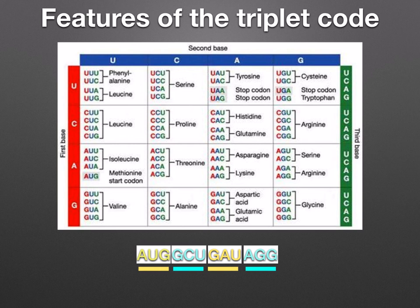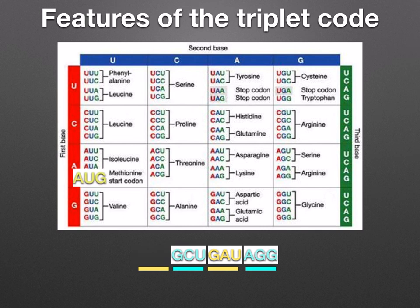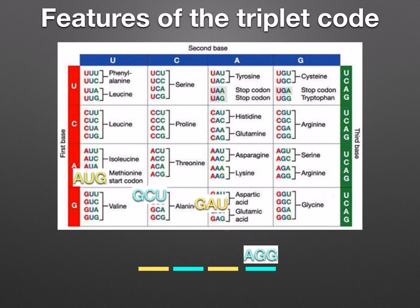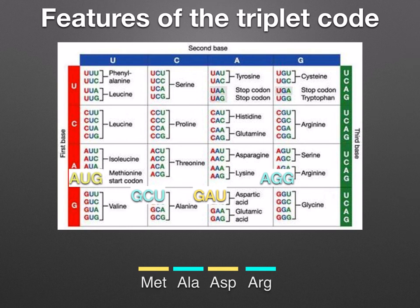Let's start with AUG. You find the first base on the left where it's written A, the second base at the top where it's written U, and the third base on the very right, which is G. So the first amino acid is methionine. GCU gives alanine. GAU gives aspartic acid. And AGG gives arginine. So the amino acid sequence is methionine, alanine, aspartic acid, and arginine.